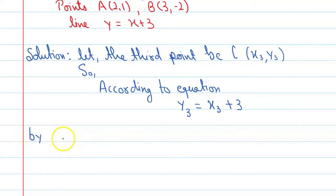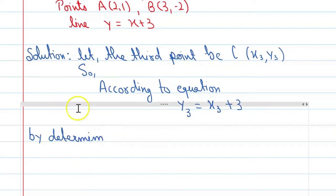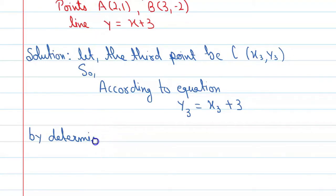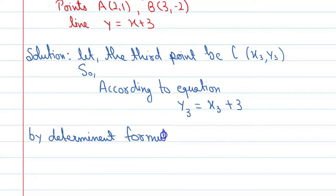Now apply the determinant formula. By the determinant formula of area of triangle ABC, we can say area of triangle ABC is equal to half times the determinant expression.